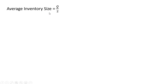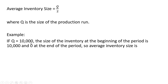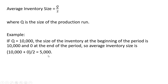The average inventory size equals Q divided by 2, where Q is the size of the production run. For example, if Q equals 10,000, the inventory at the beginning of the period is 10,000 and zero at the end as all inventory is sold, so the average inventory size is 10,000 plus zero divided by 2, or 5,000.